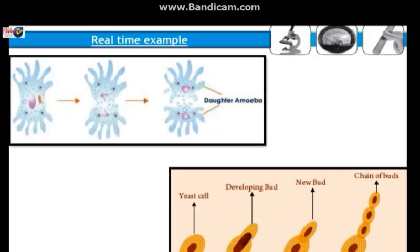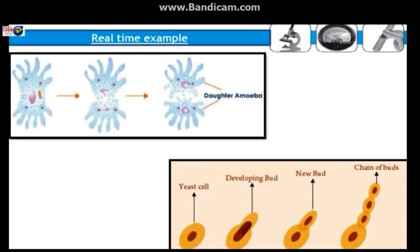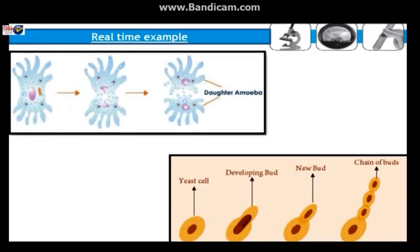Real-time example. Reproduction: unlike other life processes, it is not essential to maintain the life of an individual, but it is necessary to maintain continuity of life. Reproduction in animals is of two types: asexual and sexual.